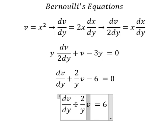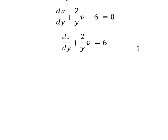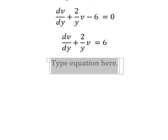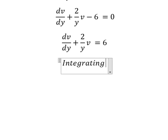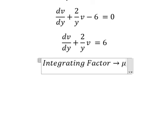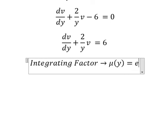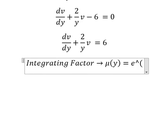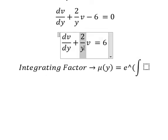So we have v and the differential of v. So we can use the integrating factor. So we need to find mu of y. That is e to the power of the integral of 2 over y next to v.